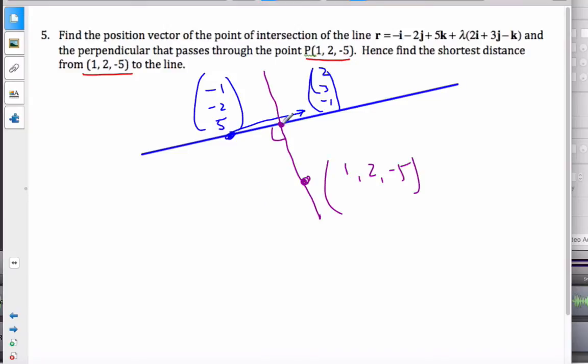I know that this point here is every single point on the line. So this point, which I'll call D, D is equal to the general point of the line, which is (-1 + 2λ, -2 + 3λ, 5 - λ). That's this point right there.